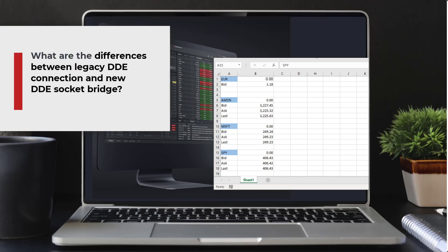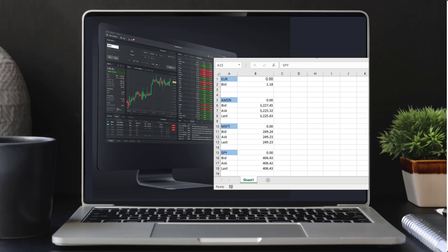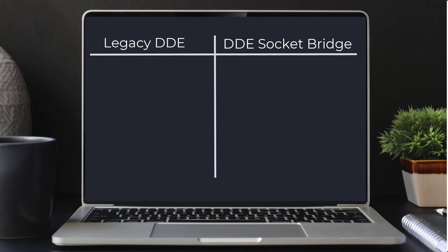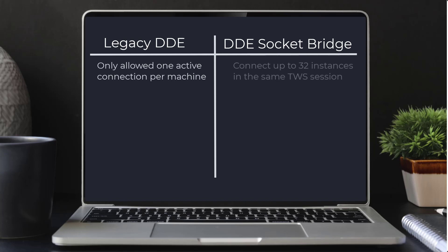Beginning with TWS API 975, the new DDE socket bridge was rolled out to replace the legacy DDE connection which had some limitations. Legacy DDE connects to TWS using a dynamic link library DLL file which only allowed one active connection per machine, while the new socket bridge allows you to connect up to 32 instances to the same TWS session.